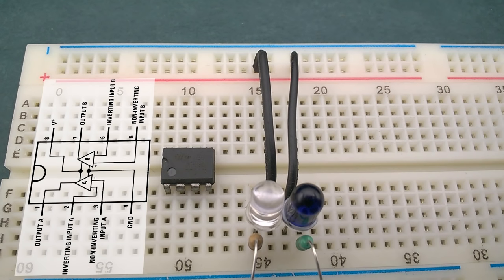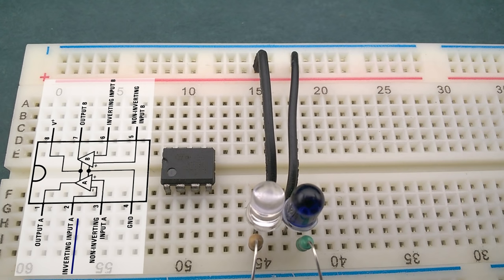This operational amplifier has 2 comparators and each comparator has 2 inputs, one is named inverting input and the other non-inverting. In simple terms, if the voltage at non-inverting input is more than the voltage at the inverting input, the output turns on.